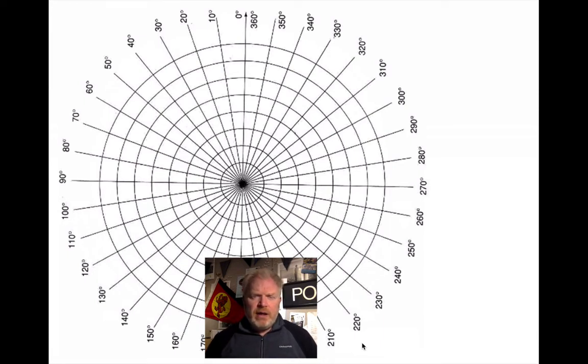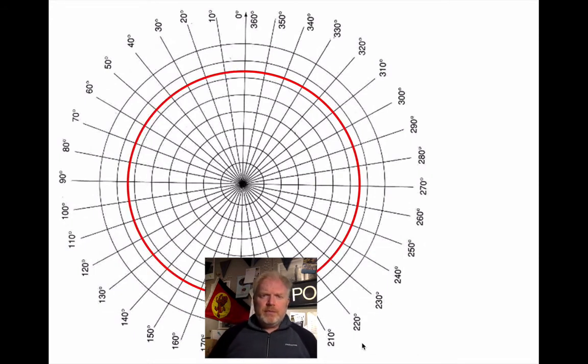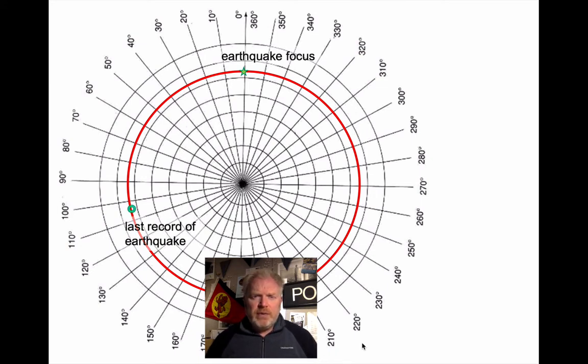If we have a piece of polar graph paper here, just because it shows angles quite nicely. Let's draw on an Earth and if we have an earthquake focus up there, the last record of that earthquake will be 104 degrees from the earthquake focus. So what that means is an earthquake wave would travel from the earthquake focus to that point 104 degrees away. Now, for this example, I'm simplifying things a little.